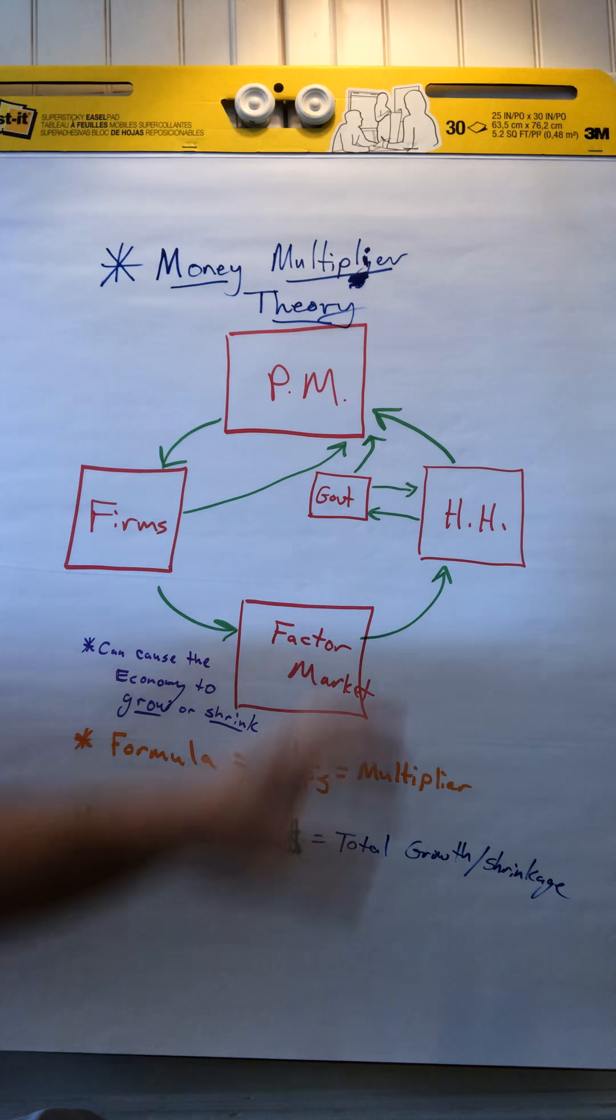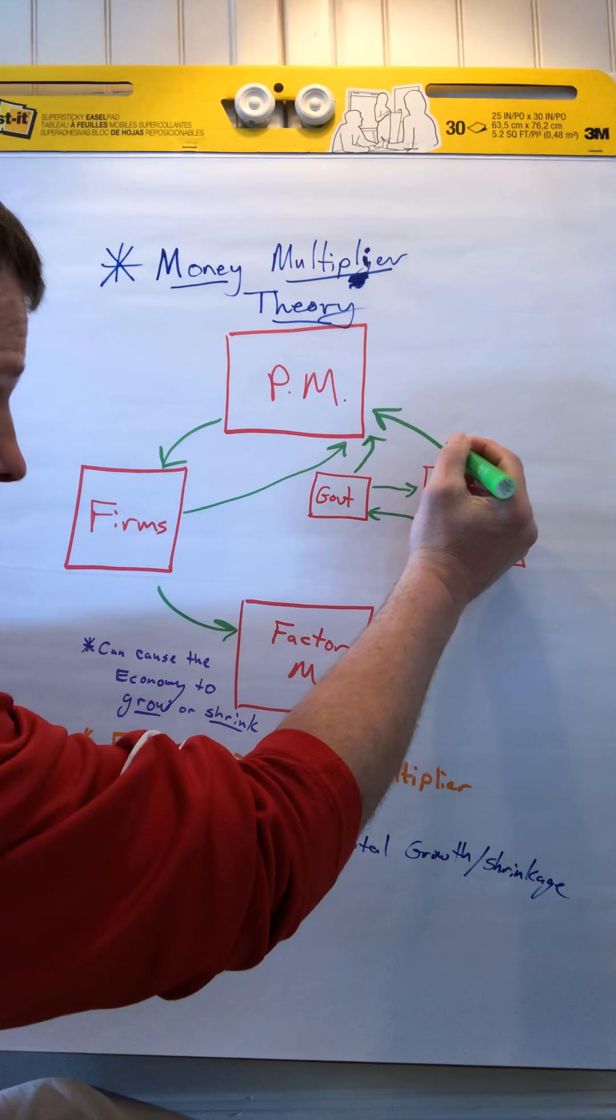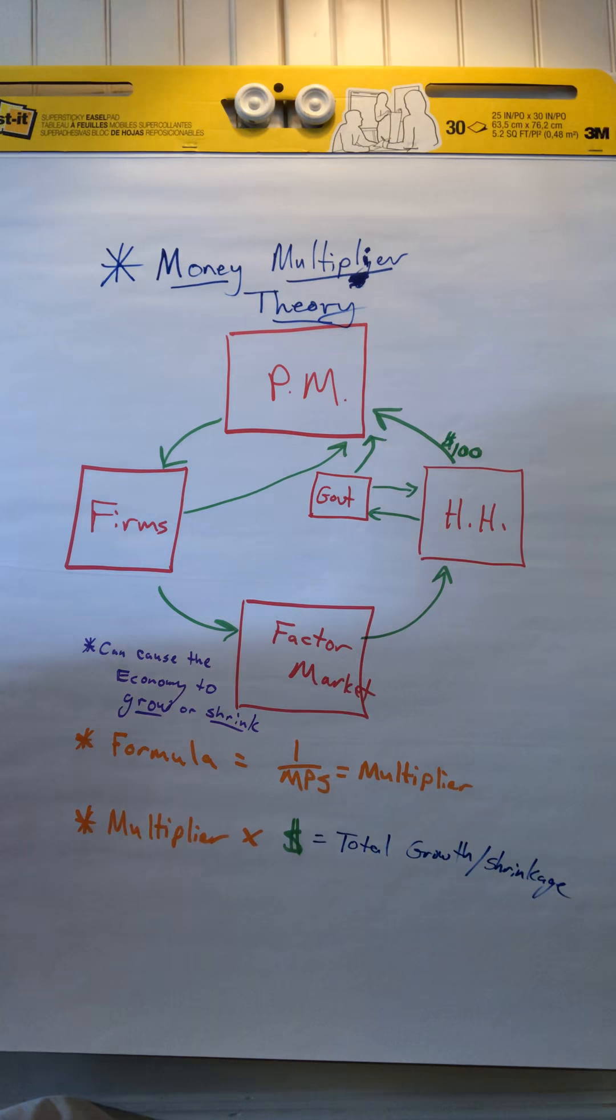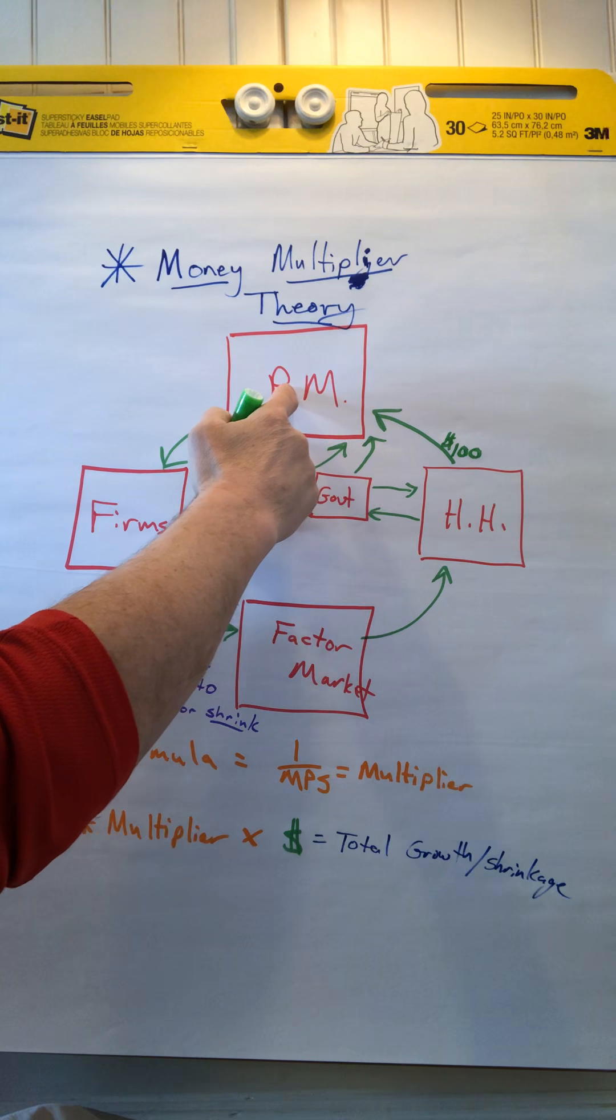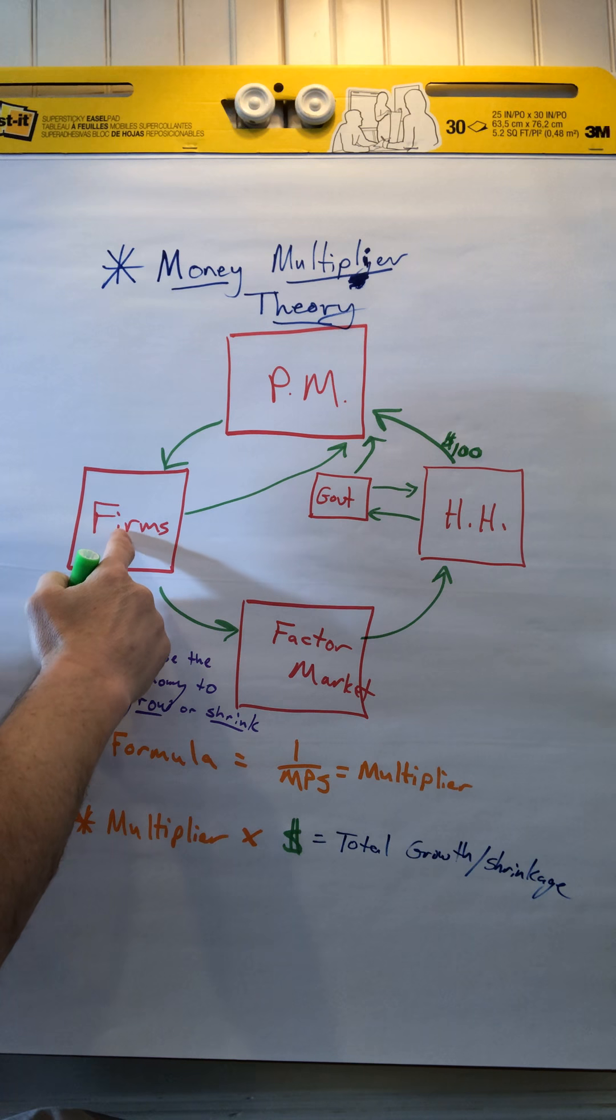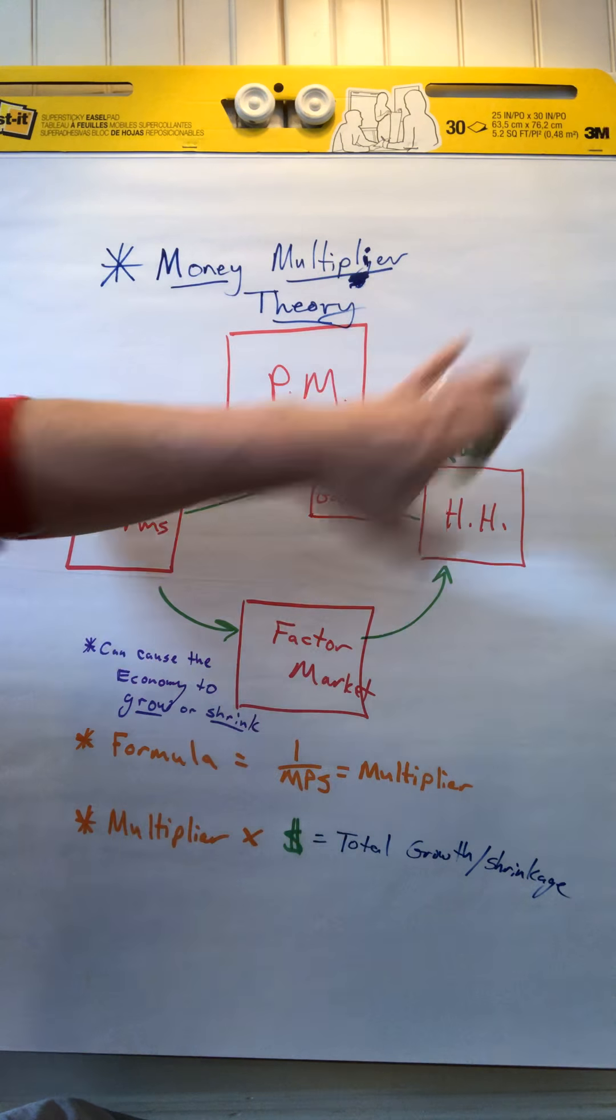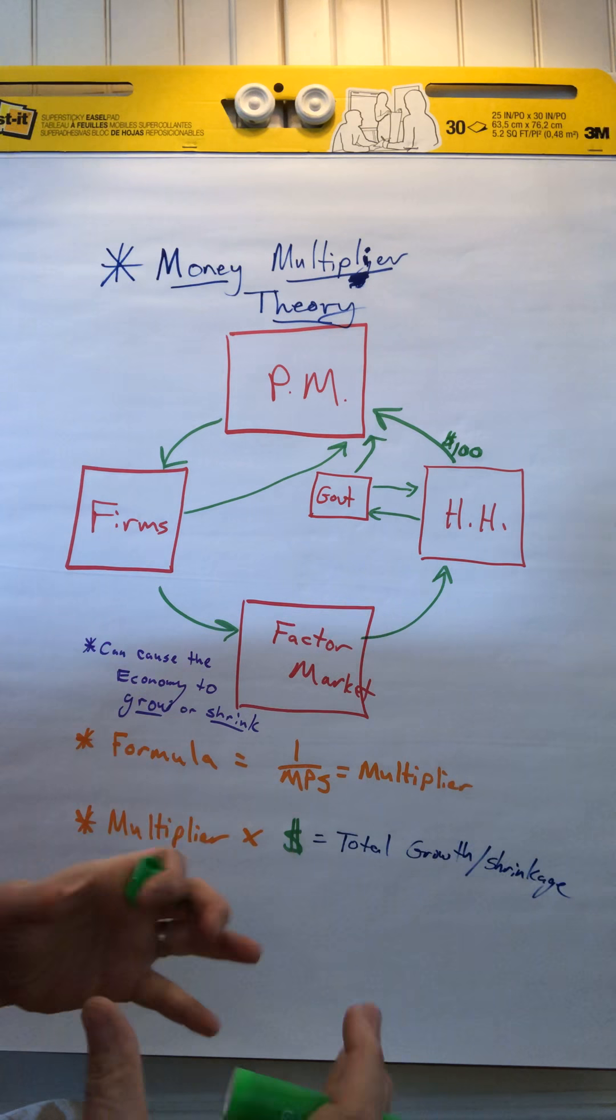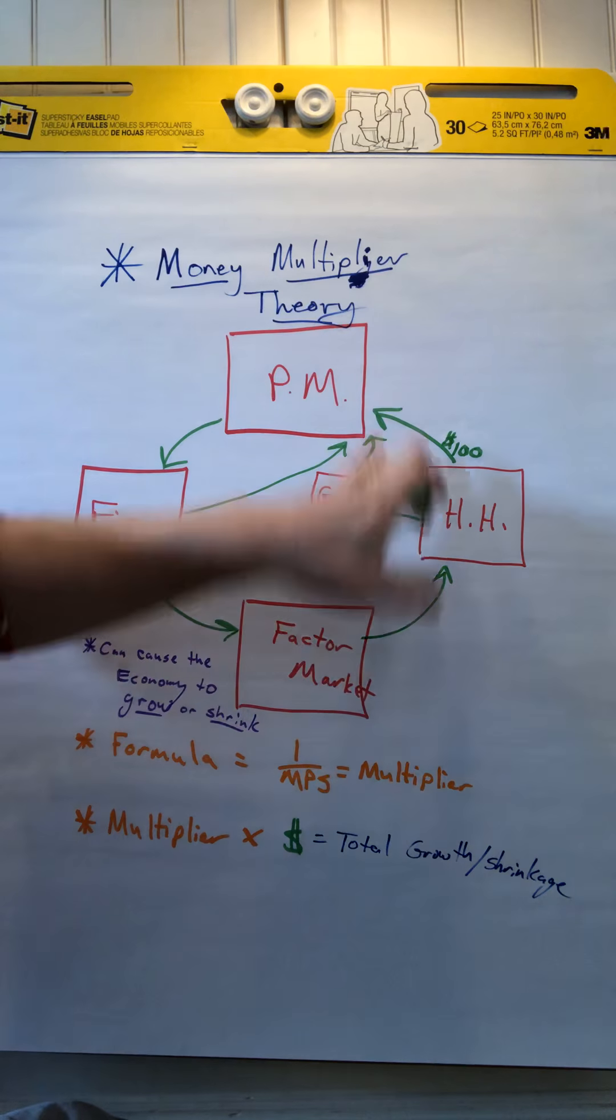So when you take a look at this, it all revolves around households. Simple example, just to show you how this ends up working. Let's say that households increase their spending by $100. What's going to happen is, based off the theory, is that $100 is going to go into product market, that $100 has to go to firms, factor market back out without any leakages into other areas. This is how basically the theory works. So we're going to go ceteris paribus, keeping one variable at a time, no leakages, just the money circulating throughout the economy.